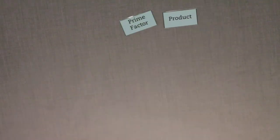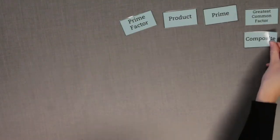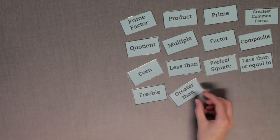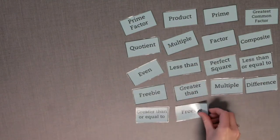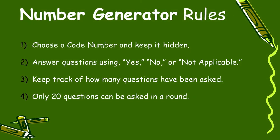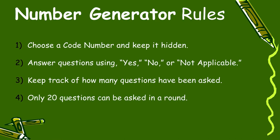Choose one person to be the number generator. The rest of the players are decoders. Lay the vocabulary cards face up so all of the decoders can read them. The number generator writes down a two-digit number and keeps it hidden. This number is the code number you will try to guess.